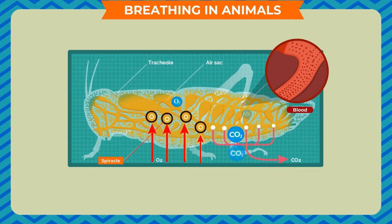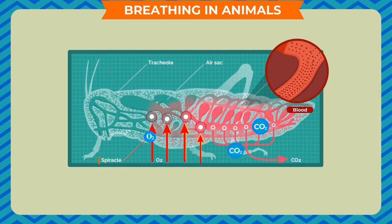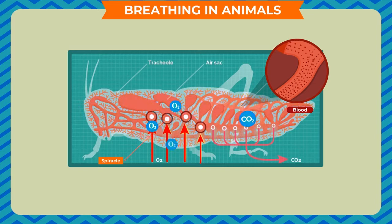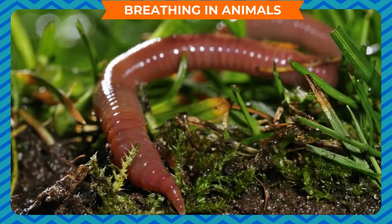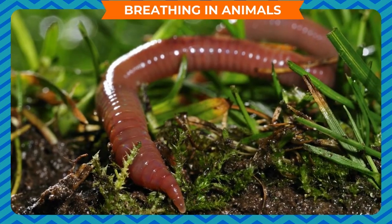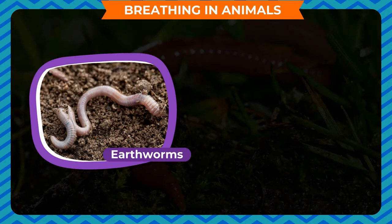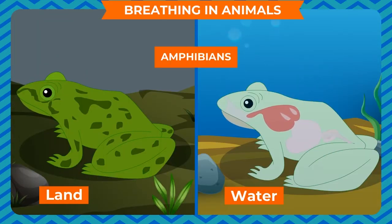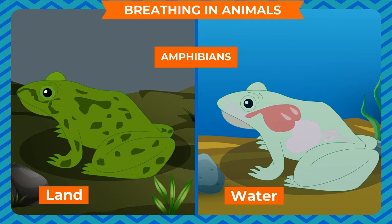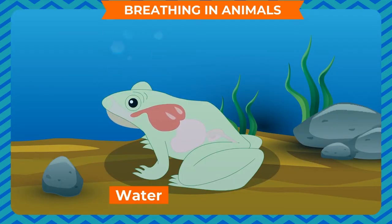This is because the blood of insects does not contain hemoglobin that carries oxygen to all body parts. Some animals such as earthworms and frogs spend part of their life on land and part of it underwater. They are called amphibians.